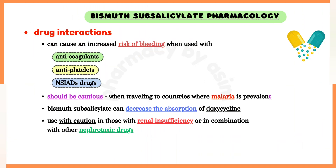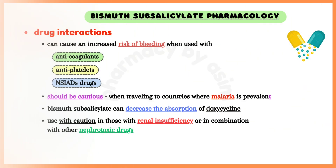Talking about drug interactions, bismuth subsalicylate can cause an increased risk of bleeding when used with anticoagulants or antiplatelets like aspirin or NSAIDs. Patients should be cautious when travelling to countries where malaria is prevalent, as it can decrease the absorption of doxycycline, which is an effective antimicrobial for prophylaxis against malaria. Lastly, use with caution in those with renal insufficiency or in combination with other nephrotoxic drugs.